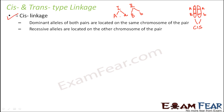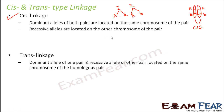You would have guessed what trans linkage is. In trans linkage, dominant alleles of one pair and recessive alleles of the other pair are located on the same chromosome of the homologous pair. That means on the same chromosome you have one dominant allele and the recessive allele of the other gene — for example, capital A and small b. On the other chromosome, you have the recessive allele of A and the dominant allele of B: small a and capital B. This is your trans linkage.